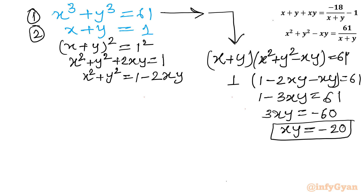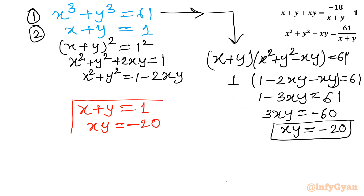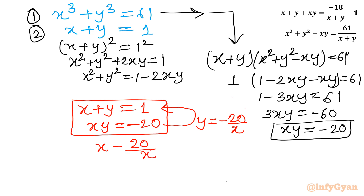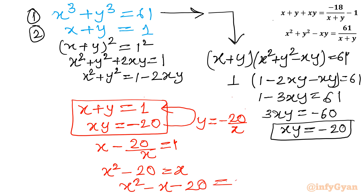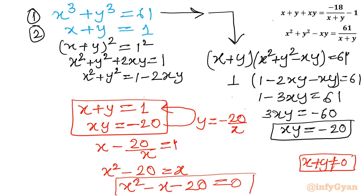The system is now converted into the simplest form: x plus y equal to 1 is the sum of roots, and xy equal to minus 20 is the product of roots. The simplest way is to find y from the second equation as y equals 1 minus x, substitute into xy equals minus 20: x minus 20 over x equals 1, so x squared minus 20 equals x, giving the quadratic x squared minus x minus 20 equal to 0.